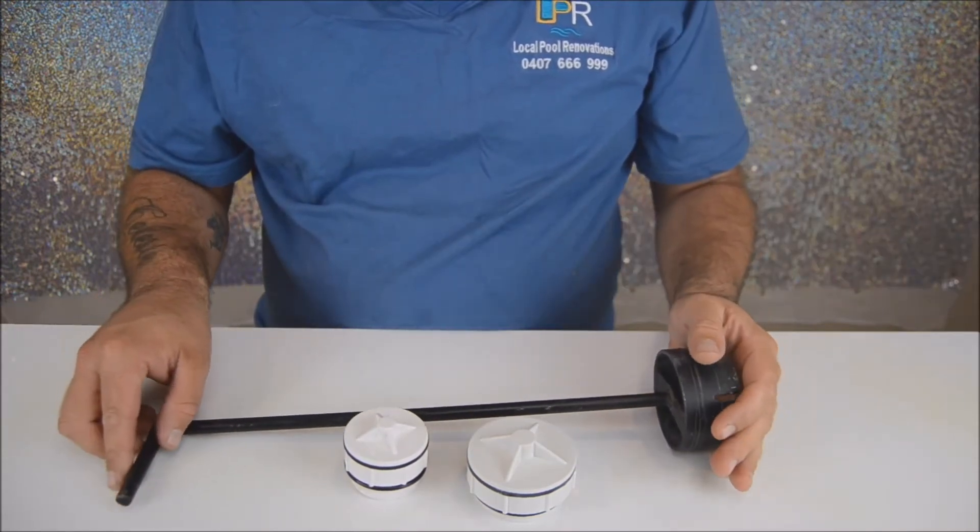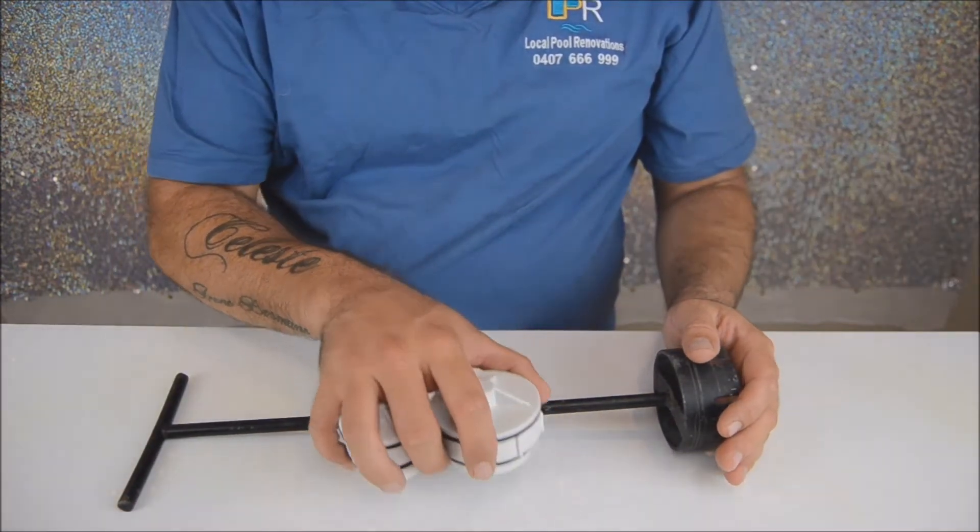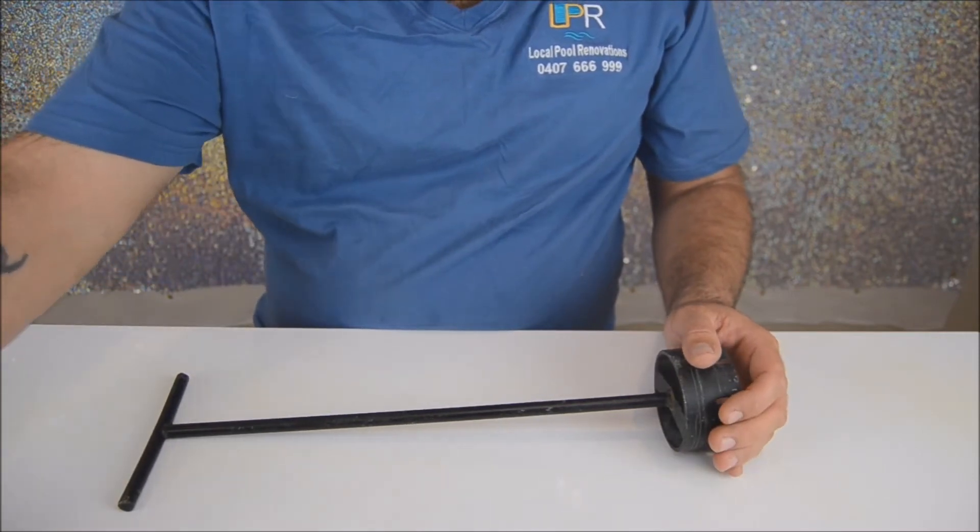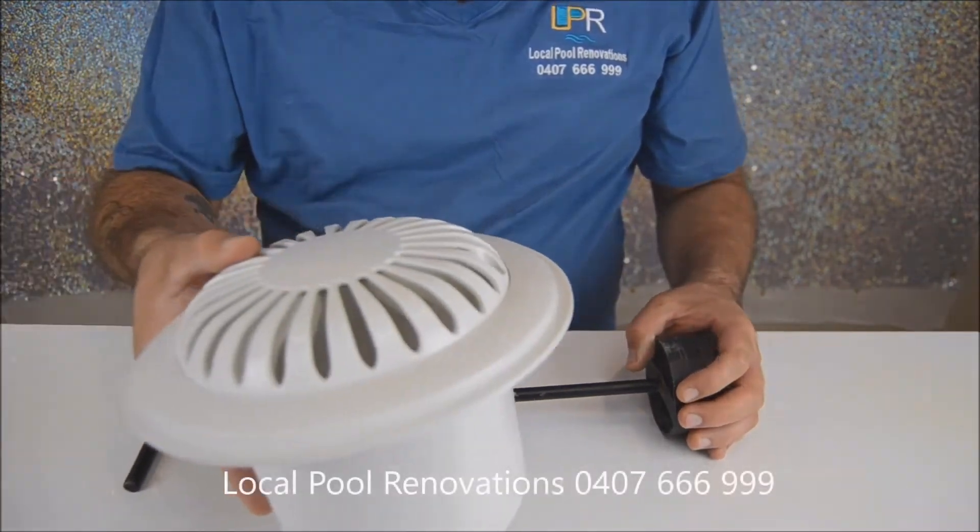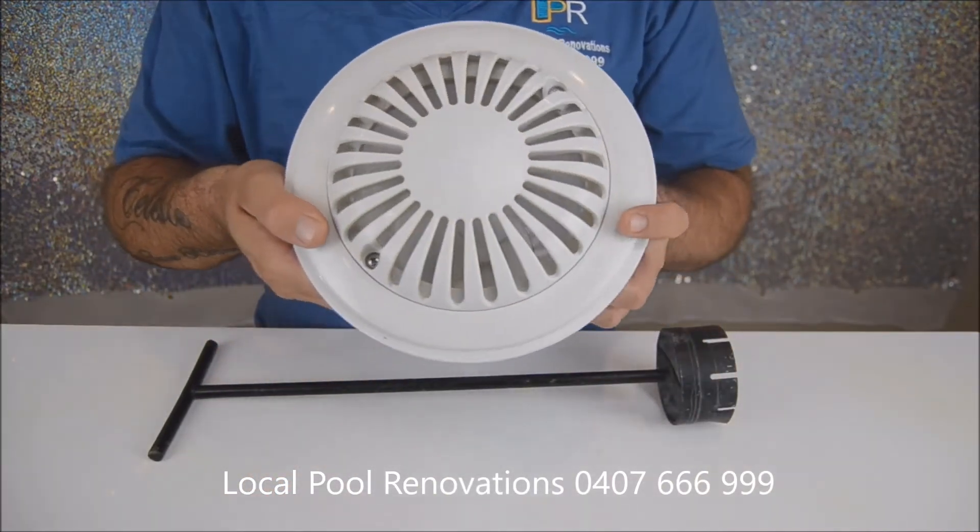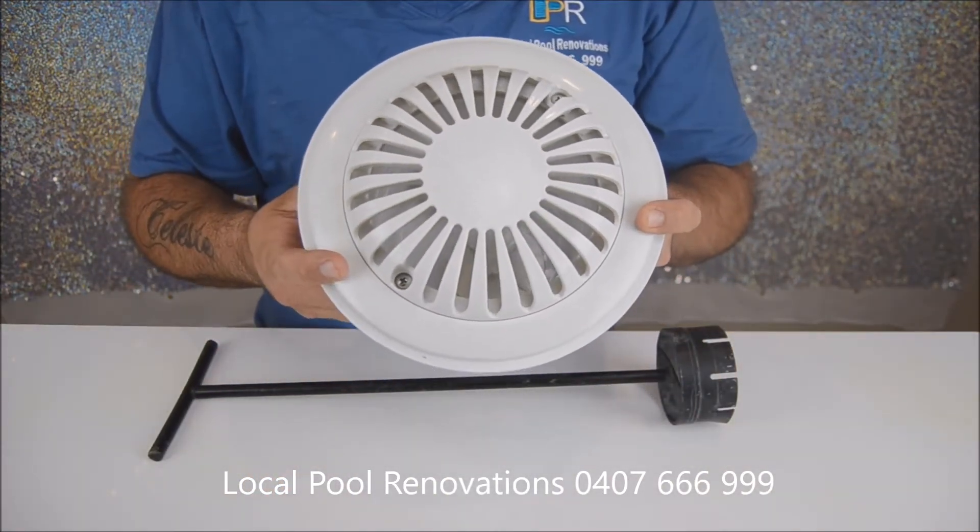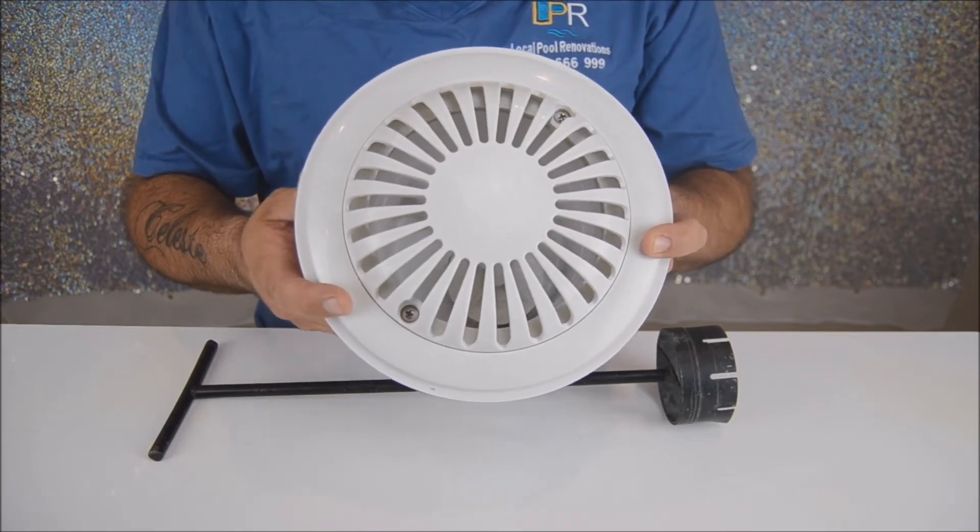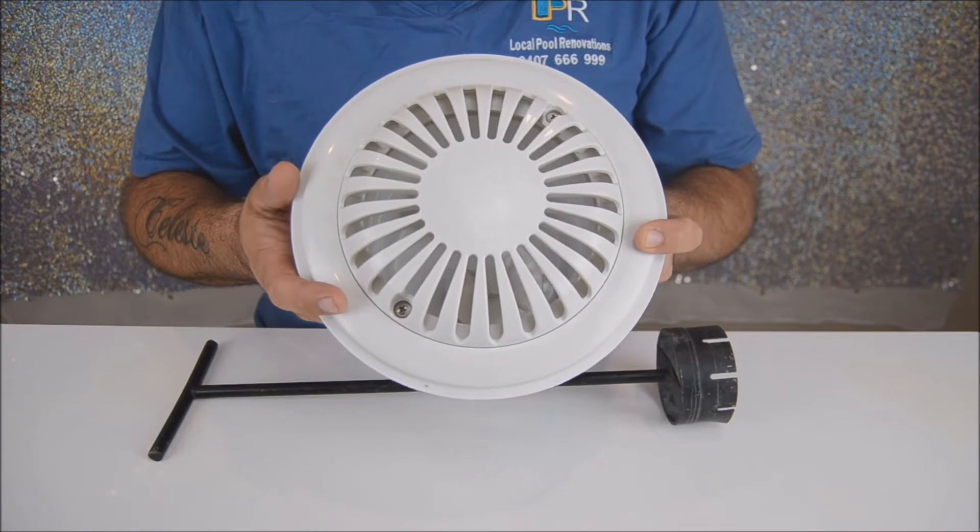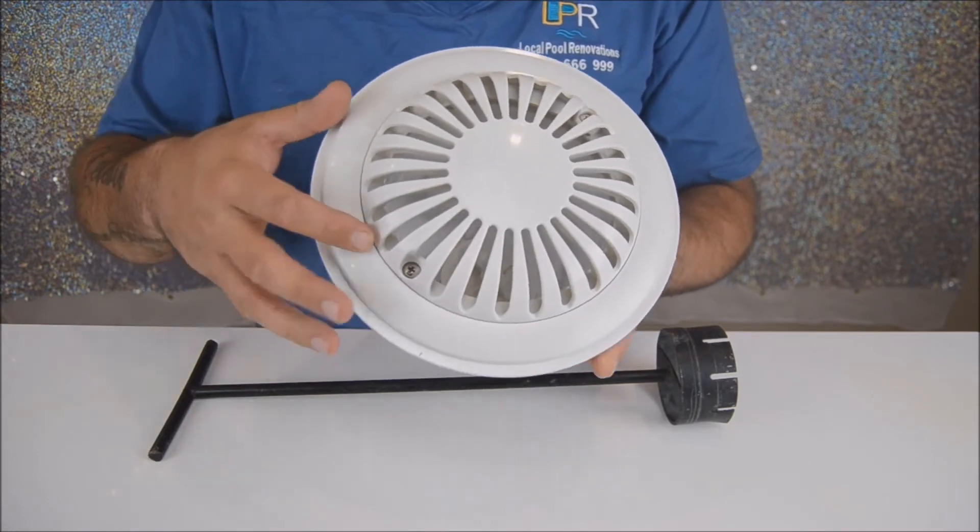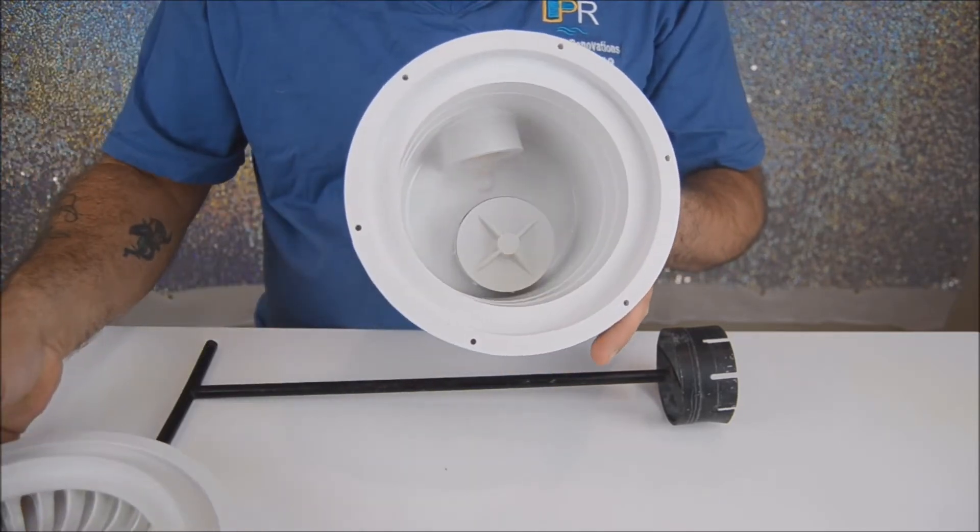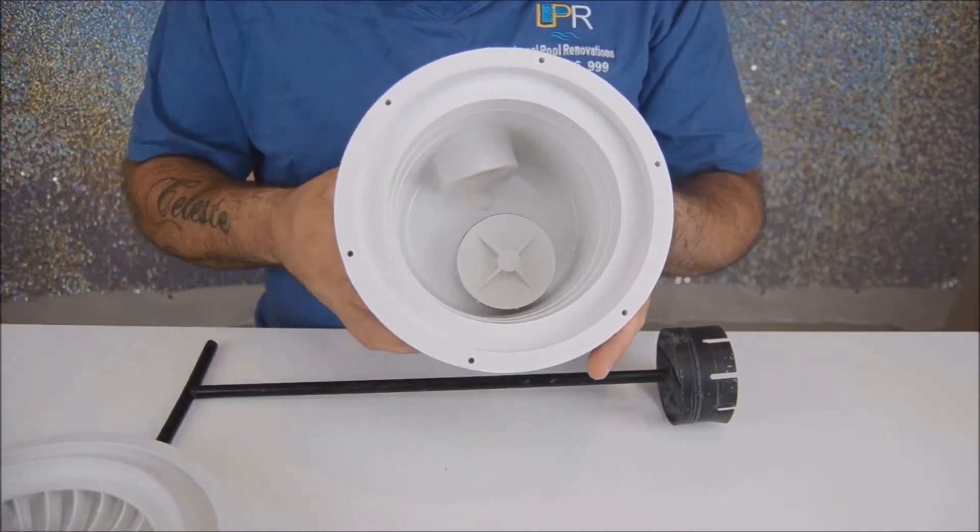You might be wondering where your hydrostatic valve is located. At the bottom of the swimming pool you will typically find what's called a main drain lid that looks similar to this. This one is a Waterco brand. In order to access your hydrostatic valve, you will need to remove the main drain lid to reveal the hydrostatic valve inside.